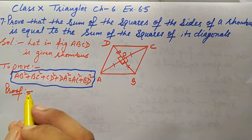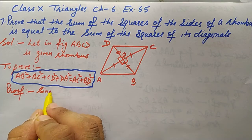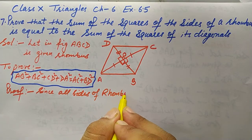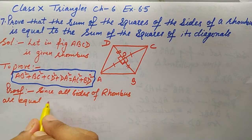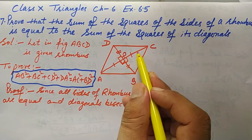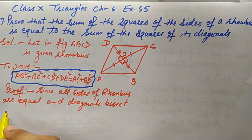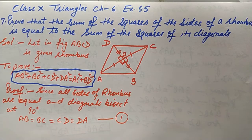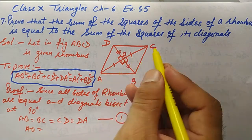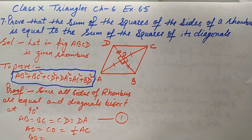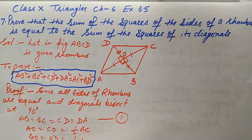Since all sides of a rhombus are equal and diagonals bisect at right angles, we have: AB = BC = CD = DA (statement 1). Also, AO = CO = AC/2 (statement 2), and BO = OD = BD/2 (statement 3). We will use these three facts to solve this question.